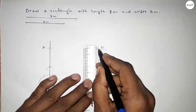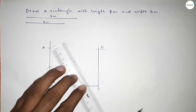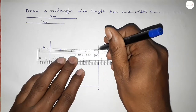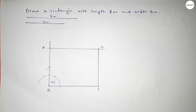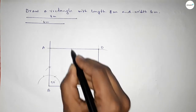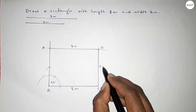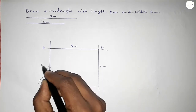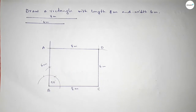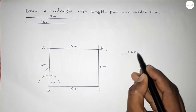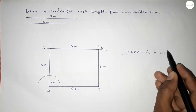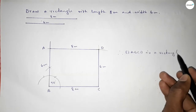Joining C and D first, next joining A and D. This side is 8 centimeters, this side also 8 centimeters, and this side is 6 centimeters, and this side 6 centimeters. Therefore, rectangle ABCD is complete.